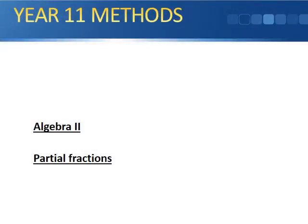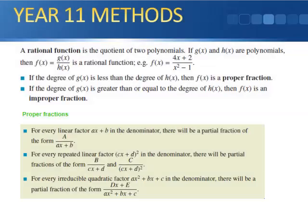Partial fractions. A rational function is the quotient of two polynomials — let's call them g(x) and h(x), so f(x) = g(x) divided by h(x). It's a rational function. Here's an example: (4x + 2) divided by (x² - 1).